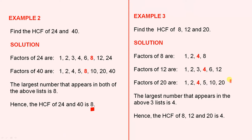The factors of 20 are 1, 2, 4, 5, 10, and 20. The largest number that appears in the above 3 lists is 4. Hence, the HCF of 8, 12, and 20 is 4.